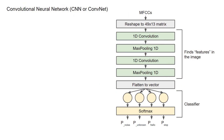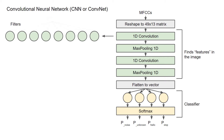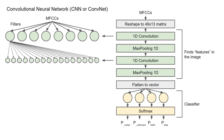Each convolution layer consists of a number of filters. The default in Edge Impulse is eight filters for the first layer. The image, or the matrix of mel-frequency cepstral coefficients, is copied to each of these filters. After filtering and max pooling, the output of each node is copied to the input of every other node in the next layer. If the next layer has 16 filters, those eight output images get copied to every filter, giving us 128 images. The filtering and max pooling steps decrease the size of each filtered image, which helps with memory and processor usage.